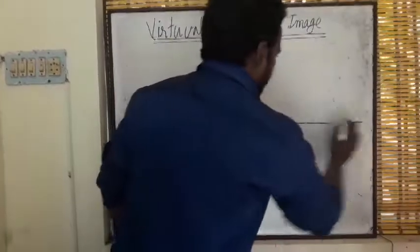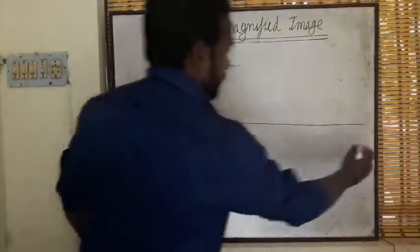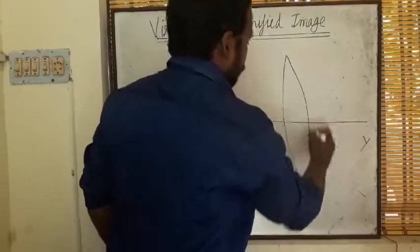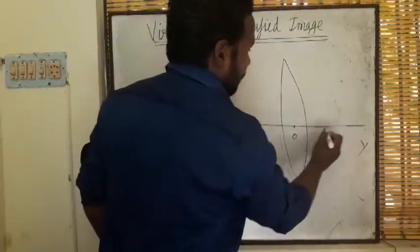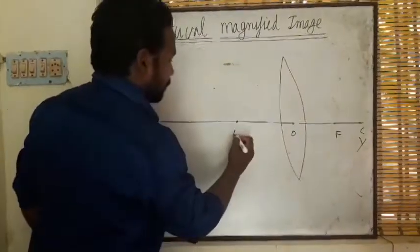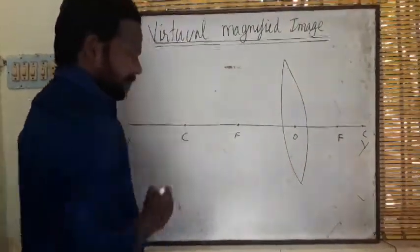We have a principal axis XY. We have the convex lens here with its optical center O. This is the principal focus F and center of curvature. On this side also we have principal focus and center of curvature.